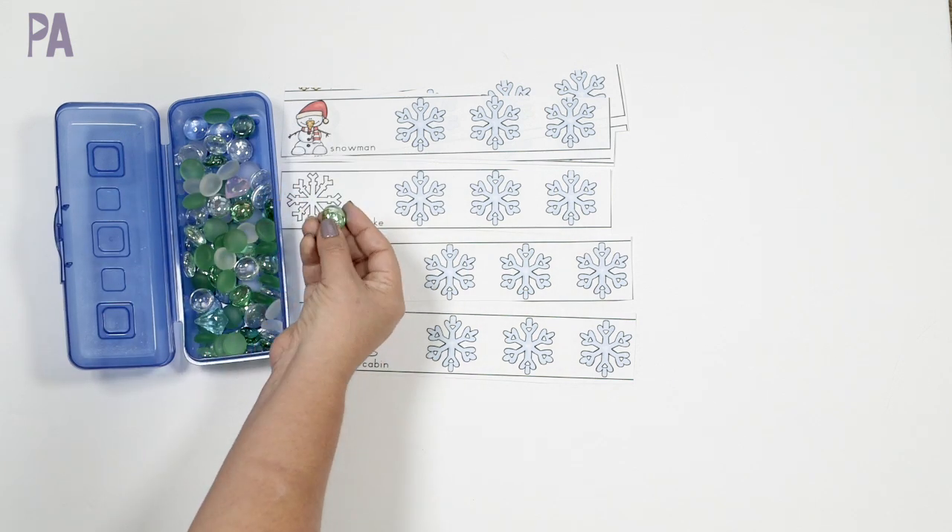And this is just placing the manipulative on the correct answer. So this would be one, two, and three. So snowman is two syllables. So we'd put one there. Snowflake is also two syllables. Iceberg, two. Cabin. We're all on twos right now. But you just put it on the correct one, two, or three syllables for each card. Very simple, very easy. So you're learning the new vocabulary as well, and it's all winter themed.